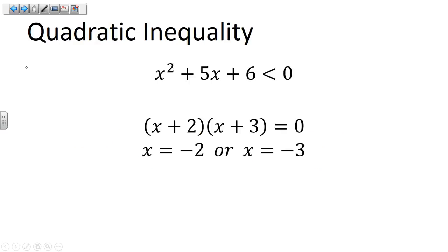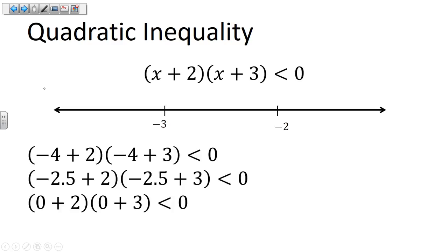Now let's try this on a quadratic. We're going to do the same thing — treat it like it's equal to zero and find the zeros. This quadratic factors nicely into x plus two times x plus three, so my two zeros are negative two and negative three. I mark those on the number line and choose a number from each of the three regions, such as negative four from the first region.